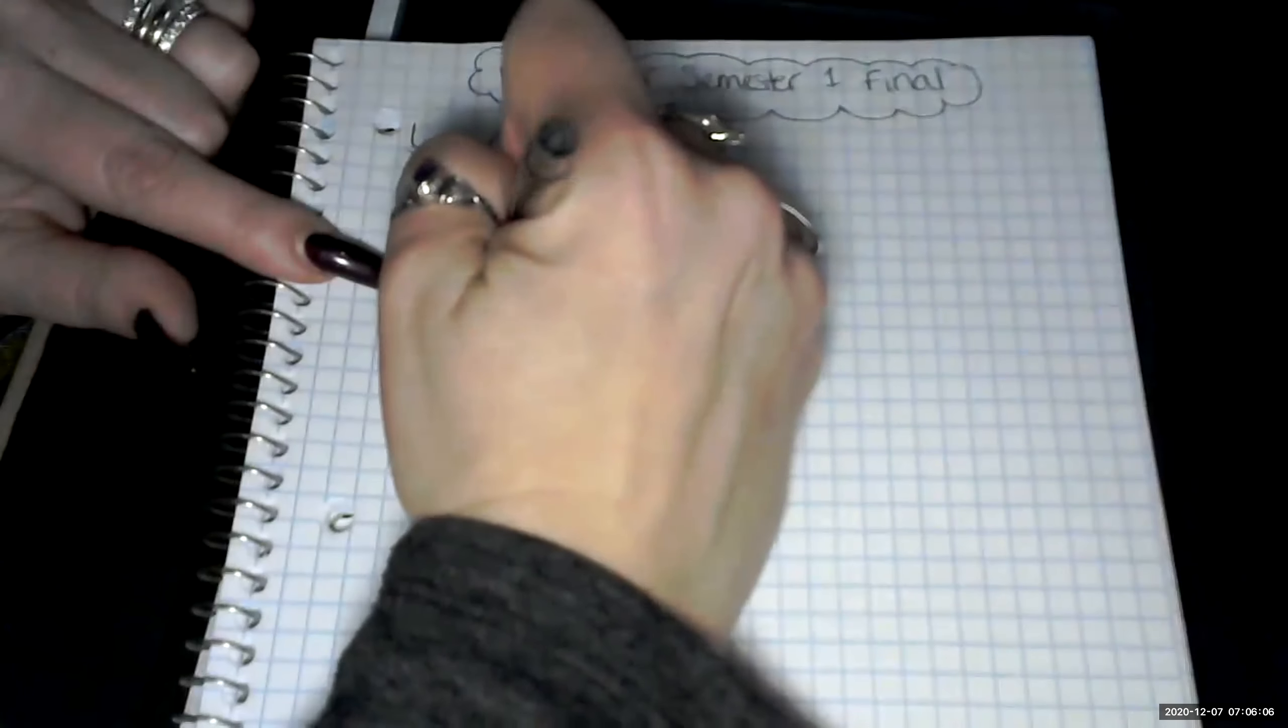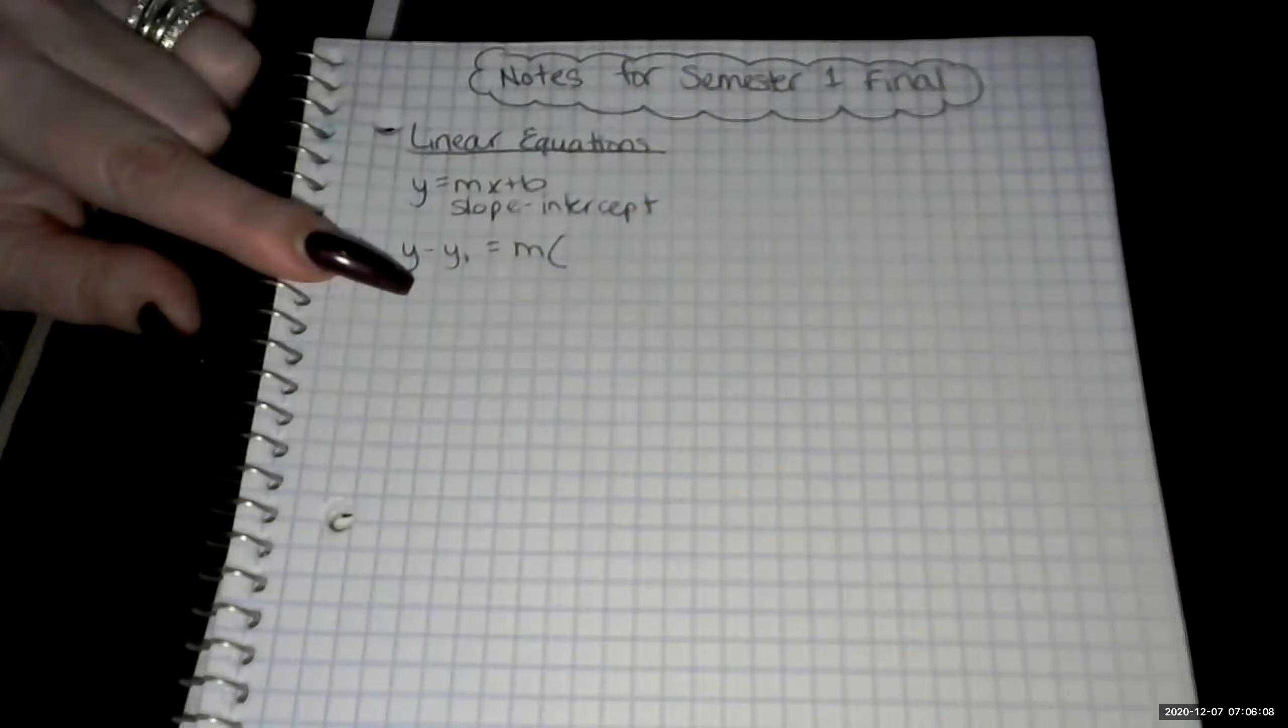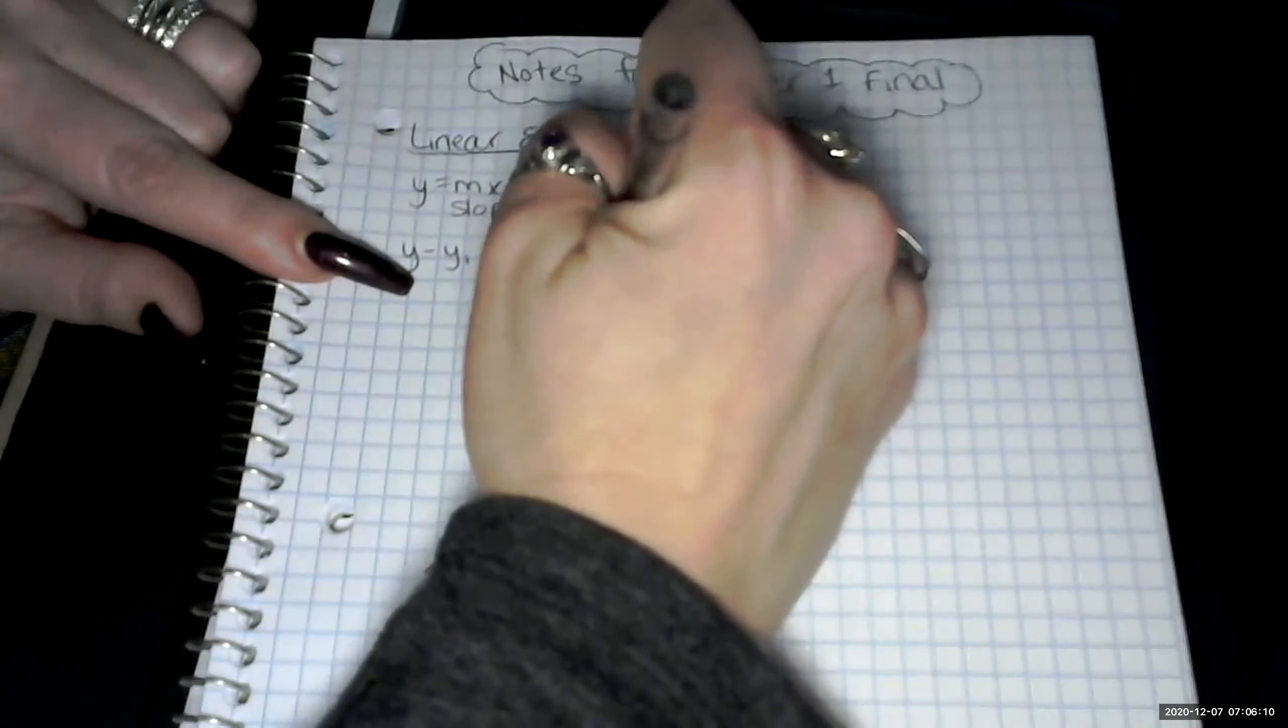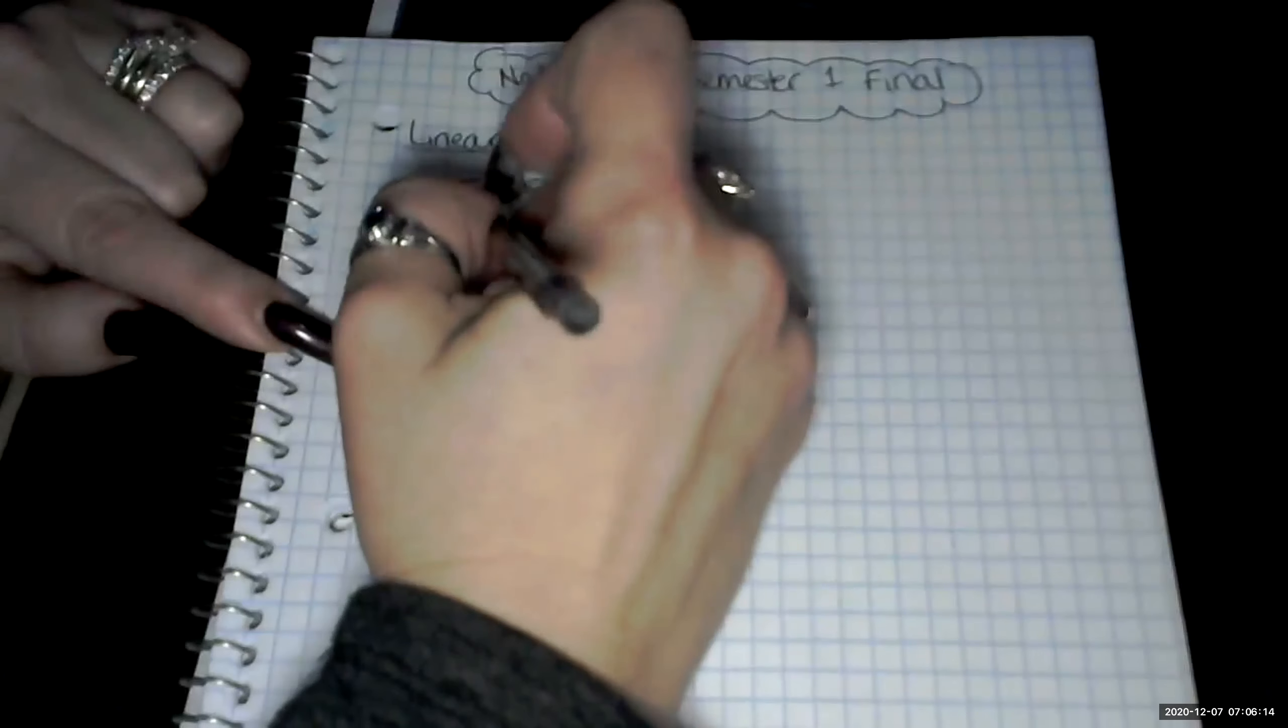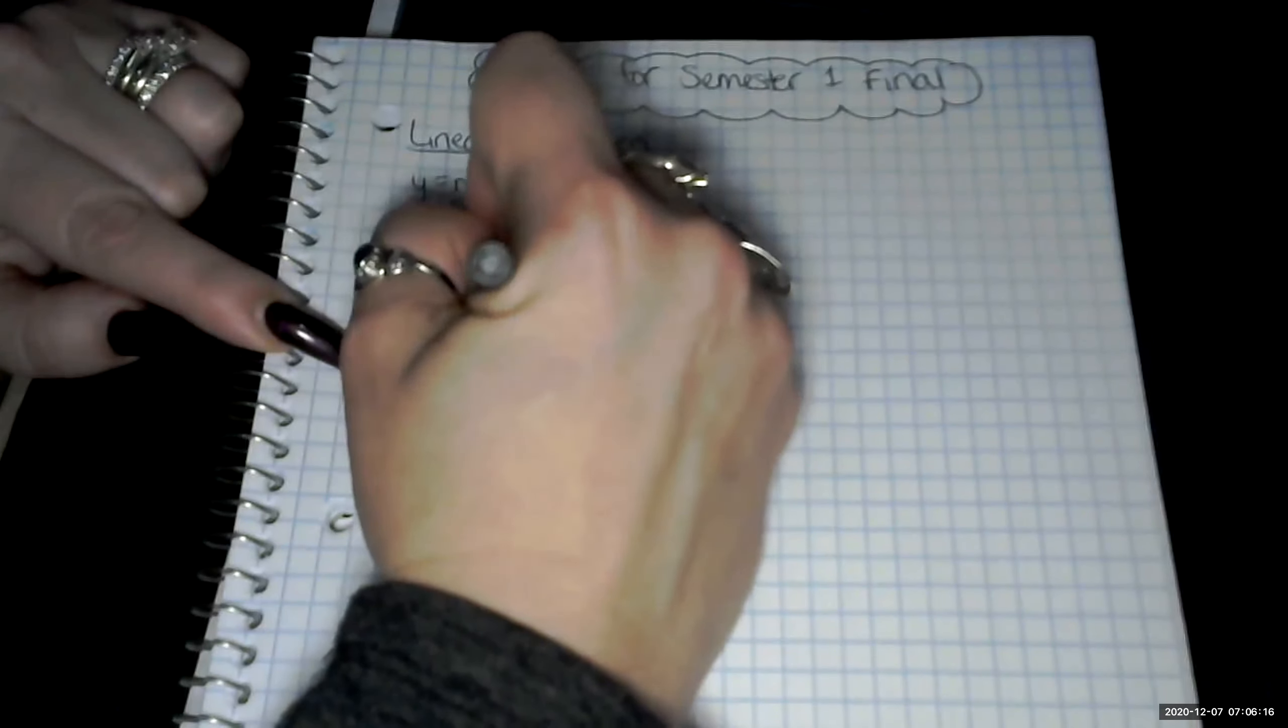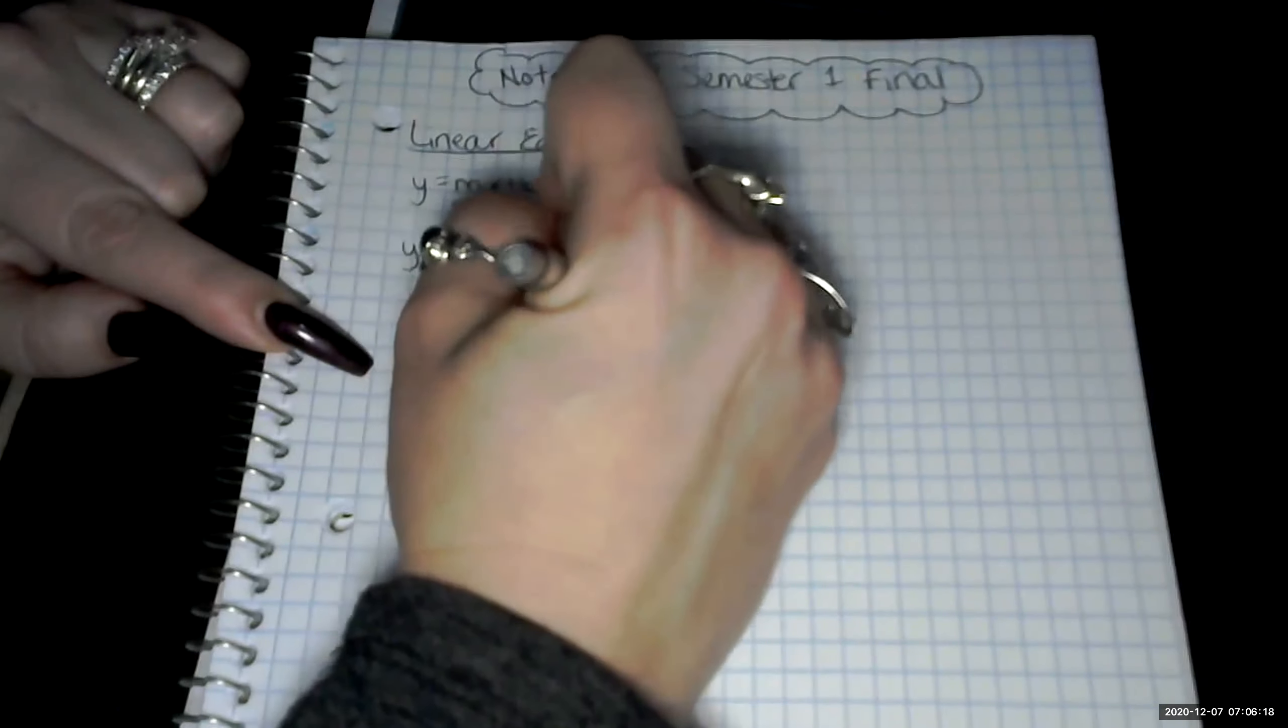Equals slope times x minus x1. And this one was point slope, so we're going to label that.